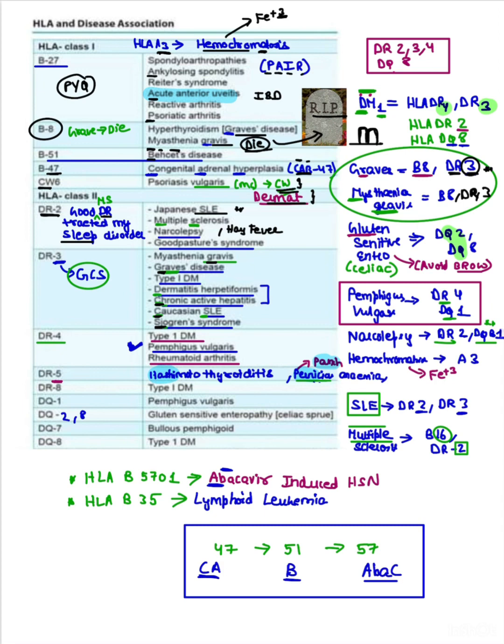Now coming to DR4. Remember there are four walls in a room, and there is one doctor: that is type 1 diabetes mellitus, and four walls in a room is rheumatoid arthritis. DR5: Hashimoto (hashi is a five-letter word) and pernicious (P for punch), that is DR5.